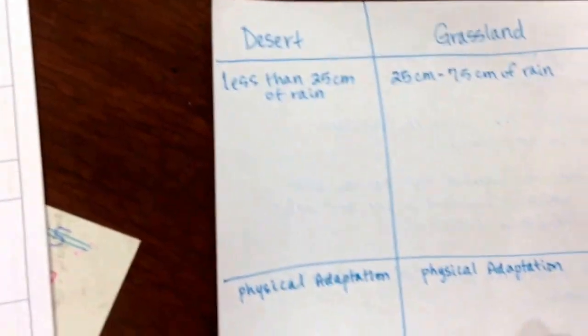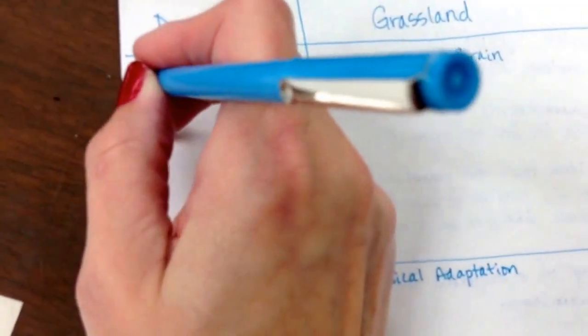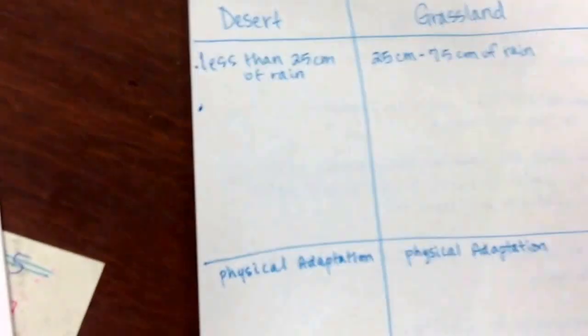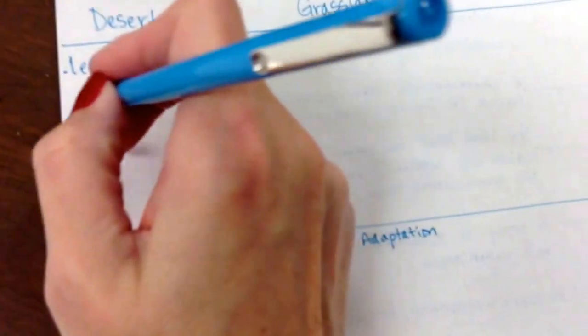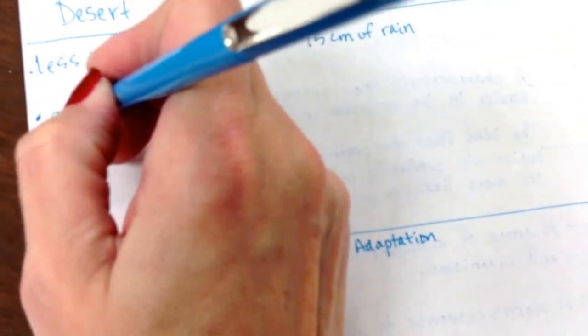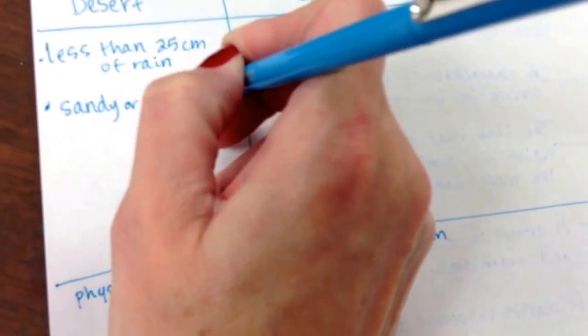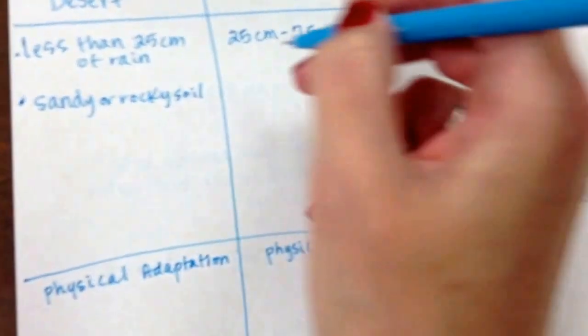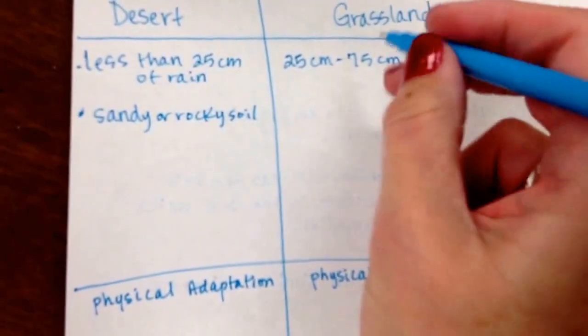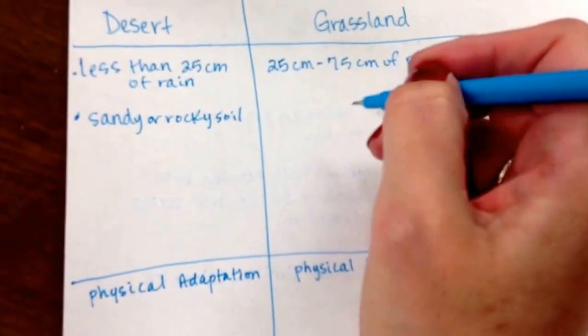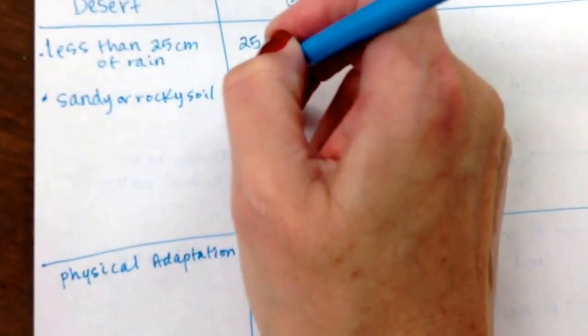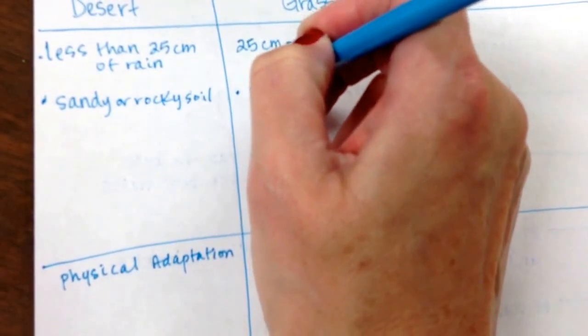So a little bit more than a desert but definitely not enough to support trees. Now let's talk about the soil. What's the soil like in the desert? What do you usually picture in a hot dry desert? Hopefully you're thinking sandy or rocky soil. In grassland it has lots of decomposers and grazing animals, so it has very rich soil.